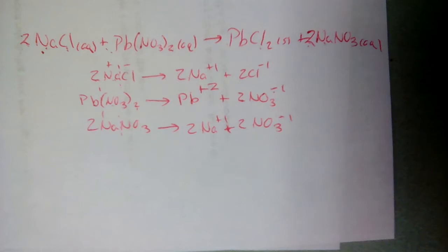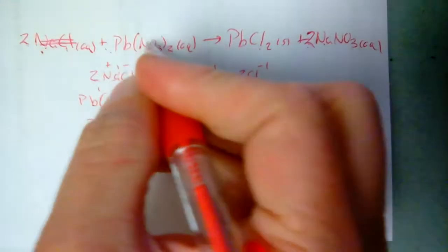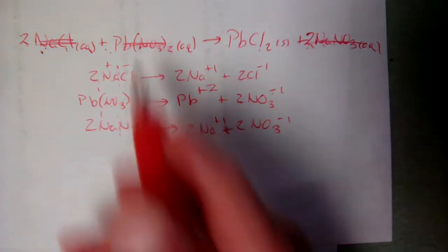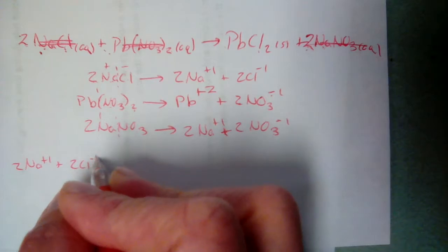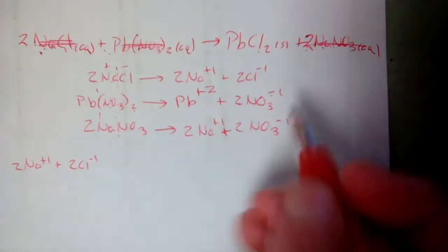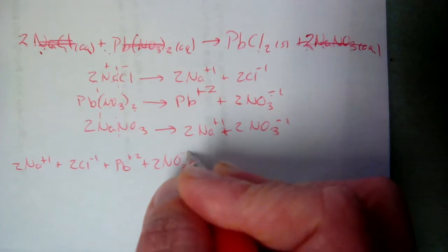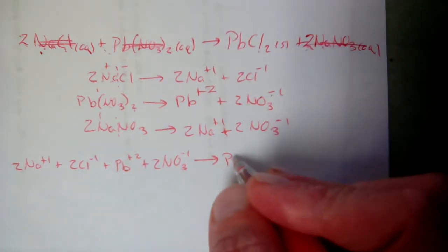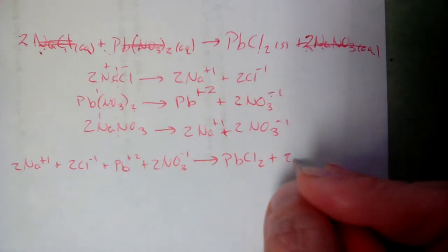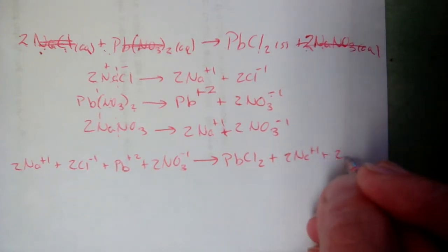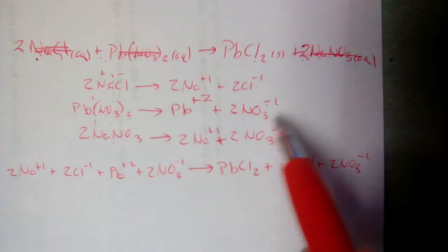Now we replace the aqueous species in the equation with what they break down into. NaCl gets replaced with 2 Na⁺ and 2 Cl⁻. Lead(II) nitrate gets replaced with Pb²⁺ and 2 NO3⁻. Lead(II) chloride stays because it's solid. Sodium nitrate gets replaced with 2 Na⁺ and 2 NO3⁻. We dissociated them so we could do this replacement.